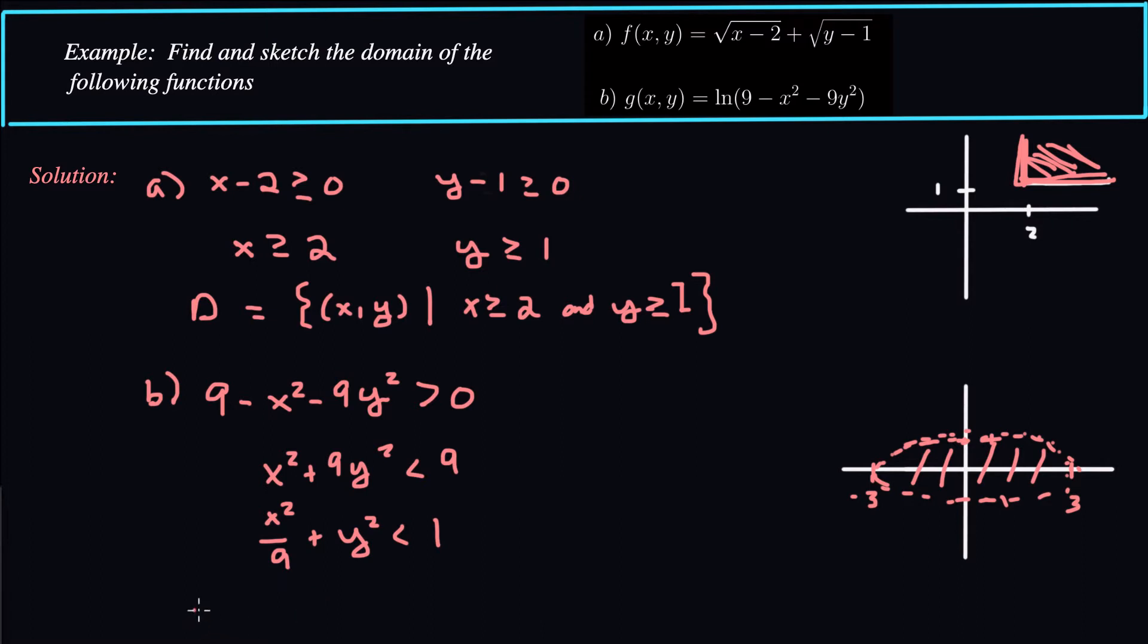So here the domain is equal to the set of all ordered pairs such that x squared over 9 plus y squared is less than 1. So I would just basically say everything inside the ellipse, but not on the surface of the ellipse.